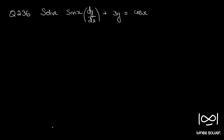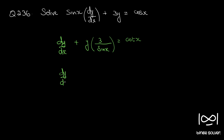Rearranging the differential equation by dividing throughout by sin(x), we get dy/dx + y · (3/sin(x)) = cos(x)/sin(x), which is cot(x). This differential equation is now in the standard form of a linear differential equation: dy/dx + Py = Q, where P = 3/sin(x) and Q = cot(x). Here P and Q are functions of x alone.